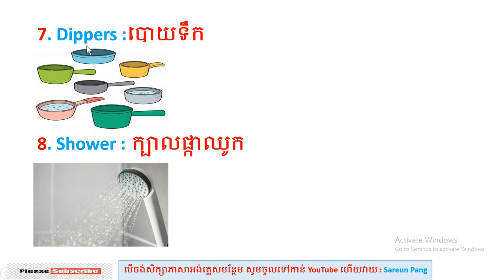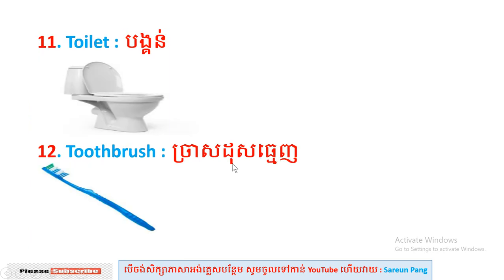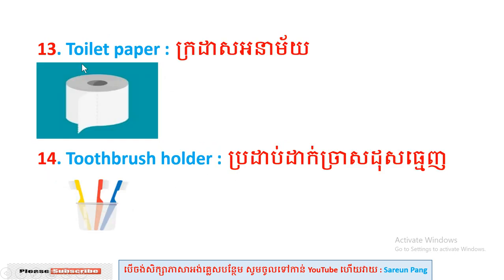Number seven: dippers. Number eight: shower. Number nine: sink. Number ten: soap dish. Number eleven: toilet. Number twelve: toothbrush.